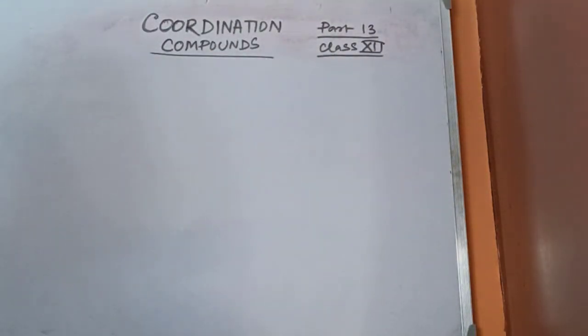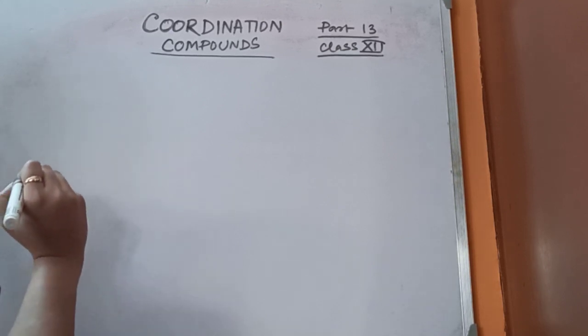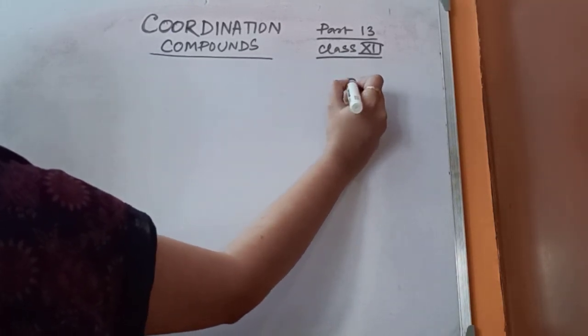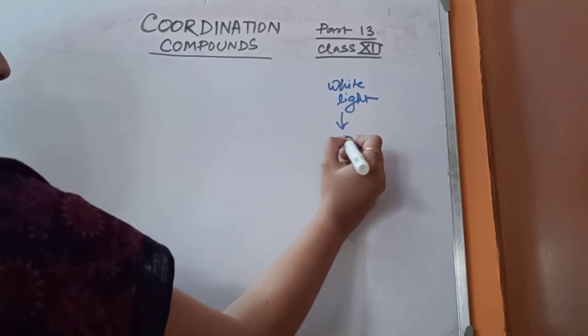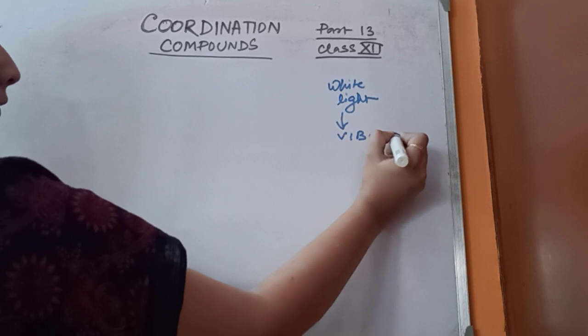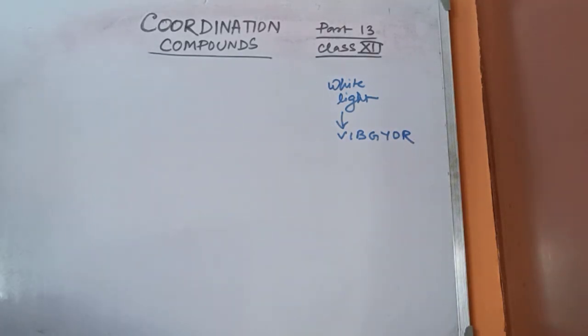Hello students, today I have come up with the next part of the chapter on coordination compounds from the class 12 syllabus. As I mentioned in the last video, today we will discuss the color of coordination compounds. We know that white light consists of seven colors: violet, indigo, blue, green, yellow, orange, and red.